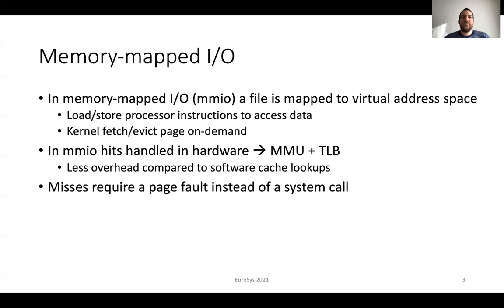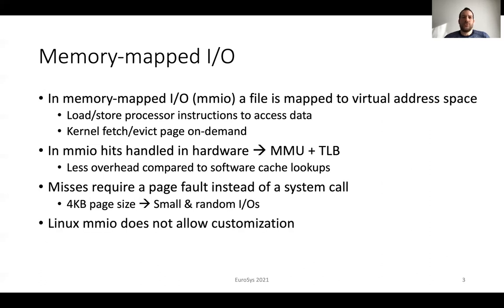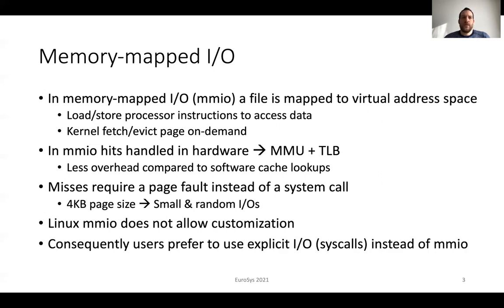On the other hand, misses require a page fault instead of a system call, and this introduces additional overheads. The 4KB page size that the page fault relies on also results in small and random IOs. Another issue is that Linux Memory Mapped IO does not allow customization as it relies on the Linux page cache. Because of these issues, today user applications prefer to do IO caching with system calls.